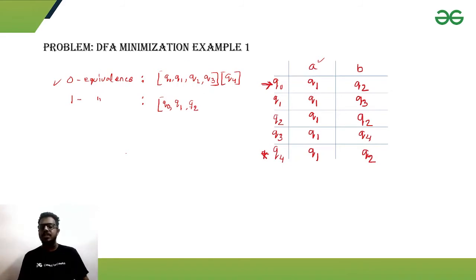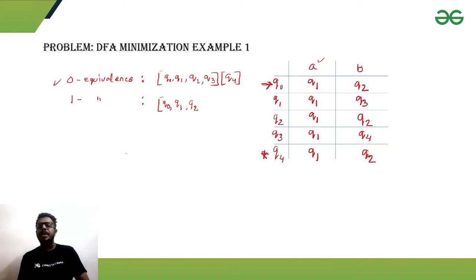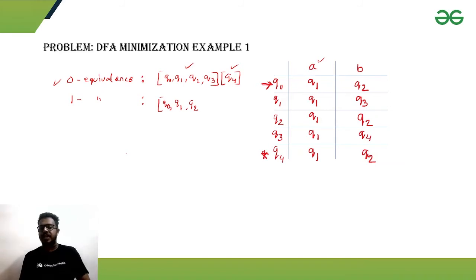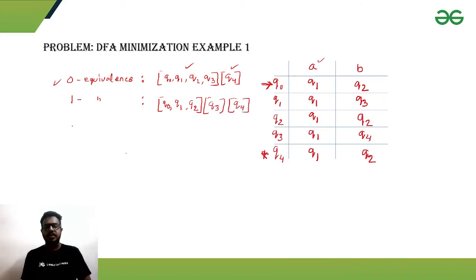Now checking q3 with q2: on a, both go to the same set. But on b, q3 goes to q4 (the final-state partition) while q2 goes to q2 (the non-final partition) — they point to different partitions from the previous equivalence. Therefore q3 is not a member of the {q0, q1, q2} set and will be separated. So the one-equivalence partition is: {q0, q1, q2}, {q3}, {q4}.